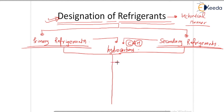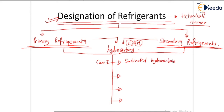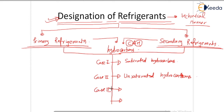There are four types of cases we have to study. The first case is when your refrigerants are saturated hydrocarbons. The second case is when the refrigerants are unsaturated hydrocarbons. The third case is when the refrigerant consists of inorganic compounds — if your refrigerant is an inorganic compound, it is designated in certain specific manners.